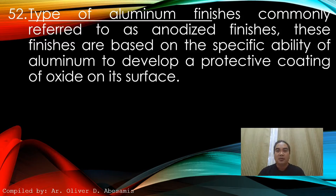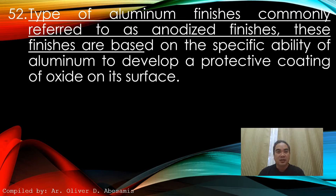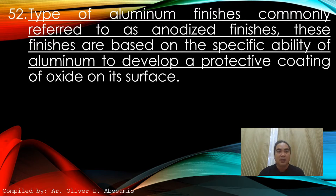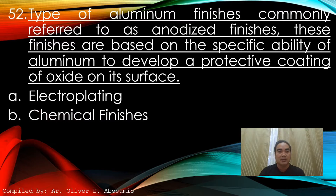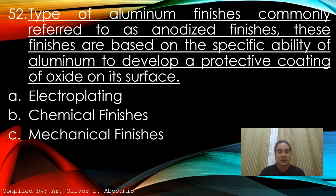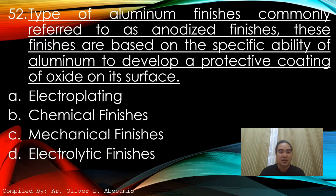Type of aluminum finish commonly referred to as anodized finishes. These finishes are based on the specific ability of aluminum to develop a protective coating of oxide on each surface. A. Electroplating. B. Chemical finishes. C. Mechanical finishes. D. Electrolytic finishes. Answer: D. Electrolytic finishes.